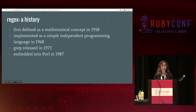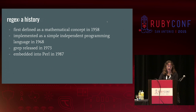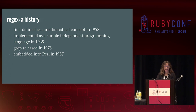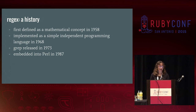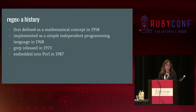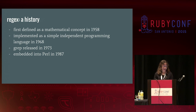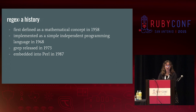How old are regex, anyway? They were first defined as a mathematical concept back in 1958, an outgrowth of set theory used for describing the grammar of regular languages. A decade later they were implemented as a simple, independent programming language. A few years after that, they began to see wider use when embedded into the Unix utility grep. They then became embedded in more powerful tools such as sed and awk, and were embedded into Perl in 1987 as a first-class language concept. Regular expressions got a lot more powerful and useful — and therefore a lot more used — when they became a domain-specific language for string processing embedded within a more general-purpose language.